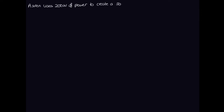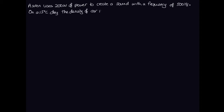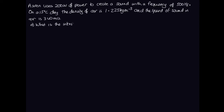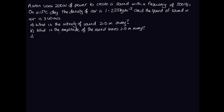The question: a siren uses 200 watts of power to create a sound with a frequency of 500 Hz. On a 15°C day, the density of air is 1.225 kg/m³ and the speed of sound in air is 340 m/s. Part A: what is the intensity of sound 2 meters away? Part B: what is the amplitude of the sound waves 2 meters away? And Part C: how far do you need to be from the source for the amplitude to be half that at 2 meters?